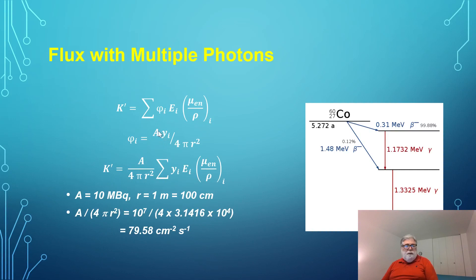Given this, substituting in for phi there, we can take the A and the 4 pi r squared out, and then inside the summation we only have those elements that are nuclide or energy specific. If we have a 10 megabecquerel source and we're measuring the dose rate at 100 centimeters, we have to use centimeters because our mu_en is in grams per square centimeter. A over 4 pi r squared calculates out to be 79.58 per square centimeter per second.